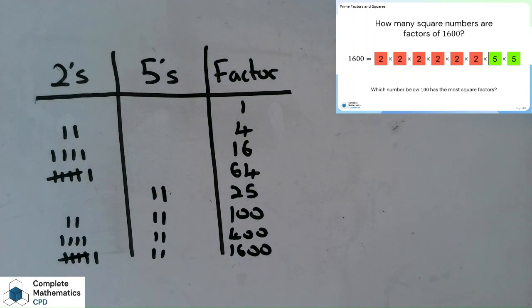Obviously this task can be extended to larger numbers. Which number below 100 has the most square factors? You don't need to stick with square numbers either. The same method can be extended to look for cube numbers. You're just looking for 3 groups of numbers which are all the same rather than 2 groups. So have a play around the task and see what you can come up with.